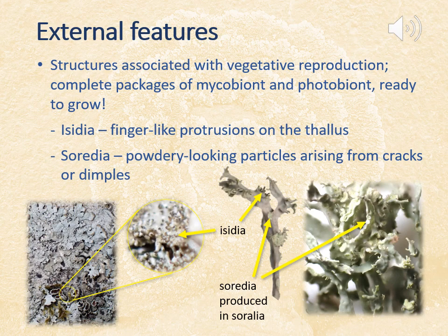Other structures associated with vegetative reproduction are soredia — small particles that look like tiny granules or powder arising from dimples or cracks called soralia. Some lichens have more than one feature, so they can have a mixture of apothecia, isidia, and soredia, depending very much on the species. For example, as you can see in the right-hand photograph, this specimen has both soredia and isidia, with the isidia very much on the edges of the thallus.